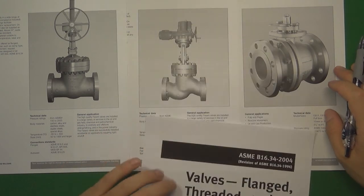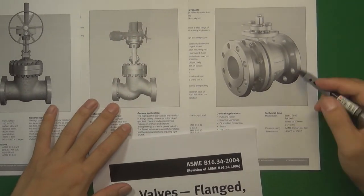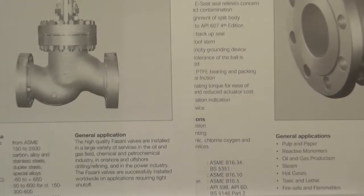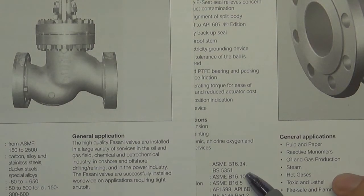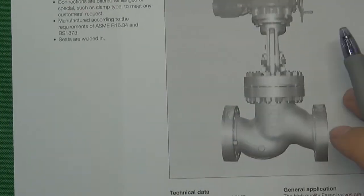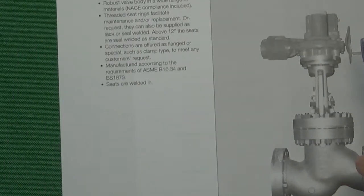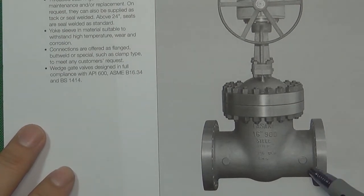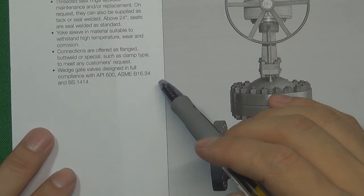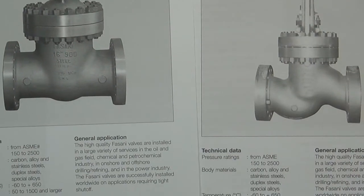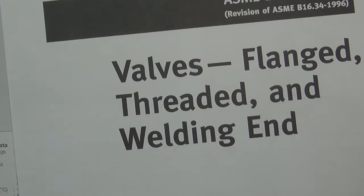Let's look at three examples first. The first one is a ball valve — a very common ball valve designed by ASME B16.34. The next one is a globe valve, also designed by ASME B16.34. So ASME B16.34 is a very important valve standard in the valve industry.